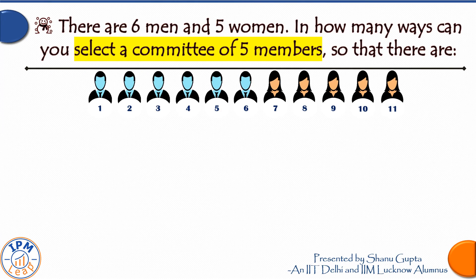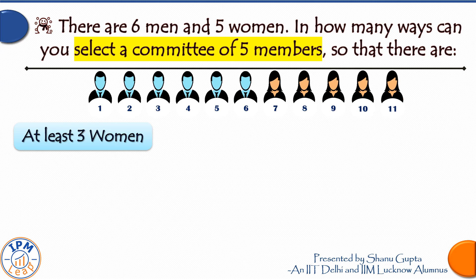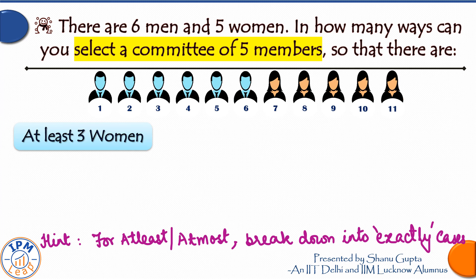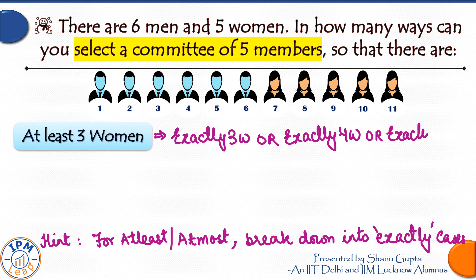The third variation: form the committee such that there are at least three women. 'At least' means a minimum of three. When you see 'at least' or 'at most' in a combinations question, always form cases using the word 'exactly.' So at least three women means exactly three, or exactly four, or exactly five women in the committee. These three cases satisfy the condition, and in each case the balance are men.